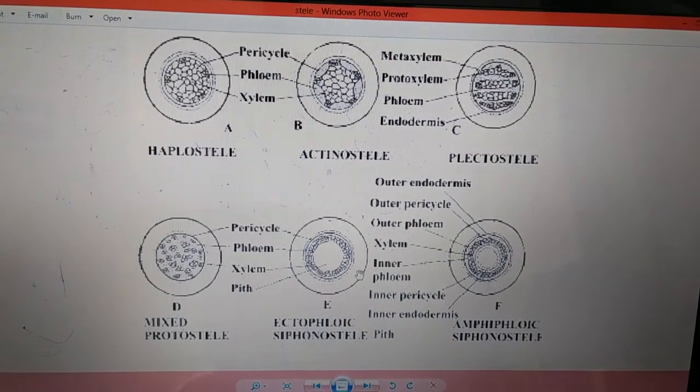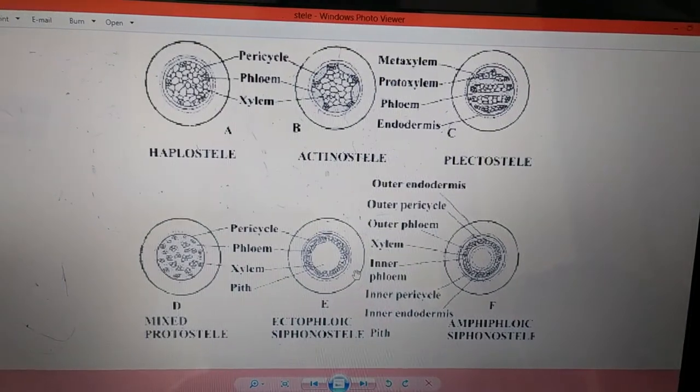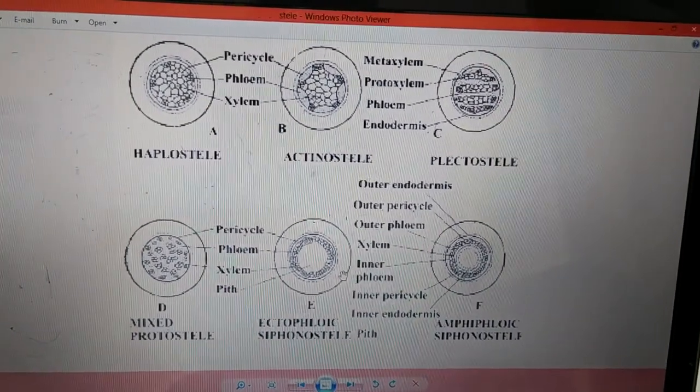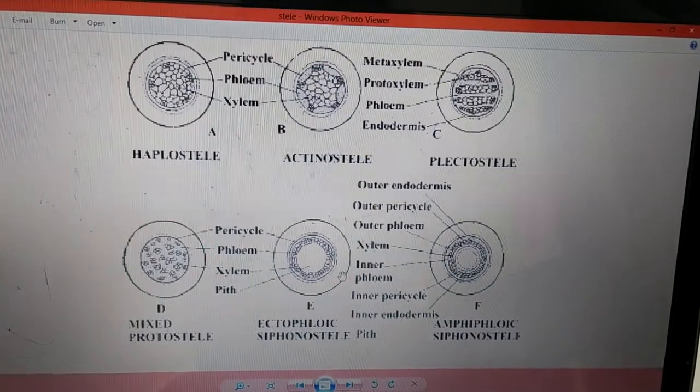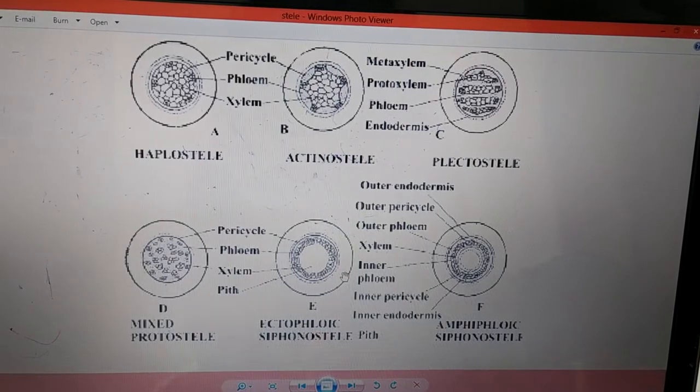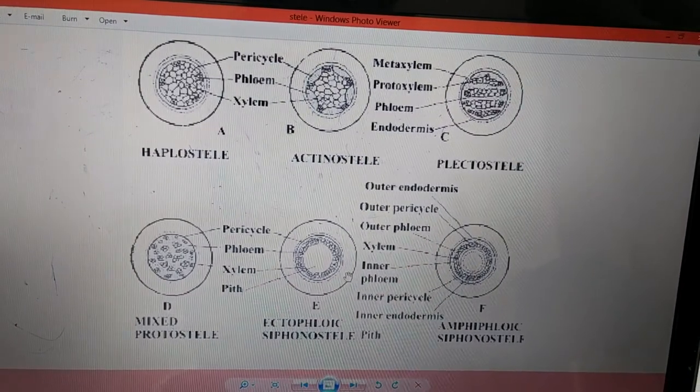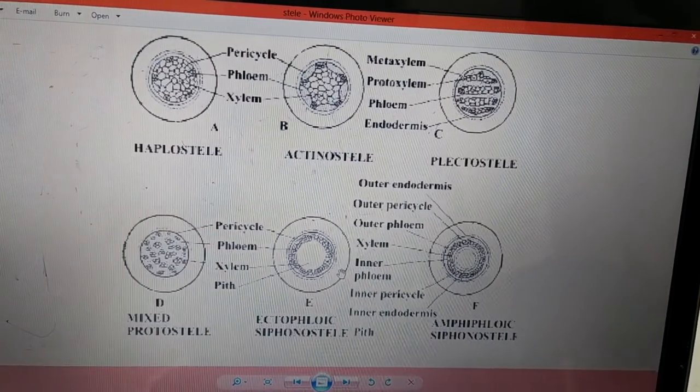For the first time in the year 1886, a botanist called Wien Tigham put forward a theory called steeler theory. What the steeler theory suggests is there is a whole central mass of vascular tissue. This tissue may be present with pith or without pith and it is surrounded by endodermis.